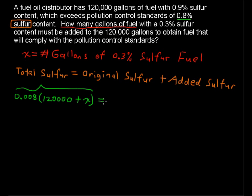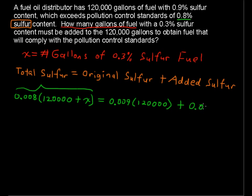That equals the original sulfur: 0.9% of the 120,000 gallons. So 0.9% as a decimal is 0.009 times 120,000 — that's the original sulfur we had. The added sulfur is 0.3% of the added fuel. Remember, x is the number of gallons of the added fuel.